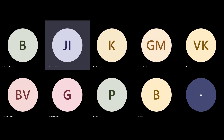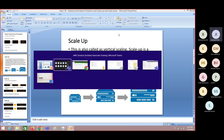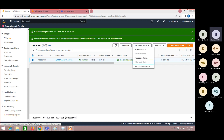In the last class, I had mentioned that there are two types of scaling: horizontal scaling and vertical scaling. Vertical scaling refers to increasing or customizing the specification of hardware — for example, increasing a machine's hard disk from 100 GB to 200 GB. This is a manual process. Whereas horizontal scaling is implemented by AWS using the auto scaling option, which we saw yesterday. Vertical scaling is done by ourselves.